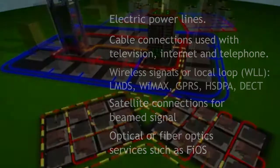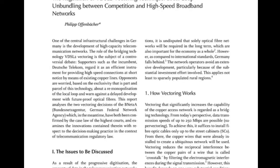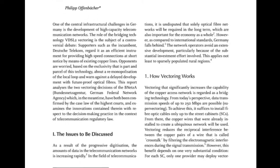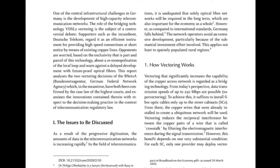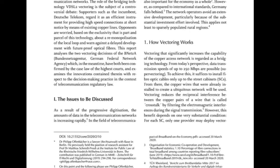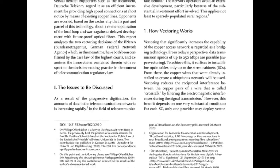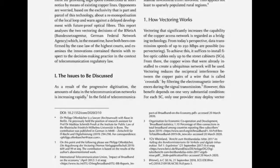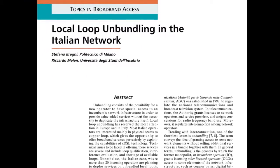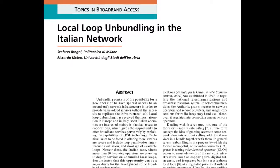Local loop connections in this sense also include local loop satellite connections, beam signal optical or fiber optic services such as FiOS. Local loop unbundling is the regulatory process of allowing multiple telecommunications operators to use connections from the telephone exchange to the customer's premises. The physical wire connection between the local exchange and the customer is known as a local loop.